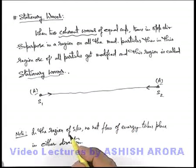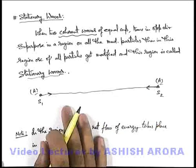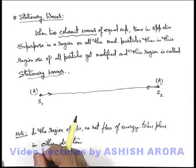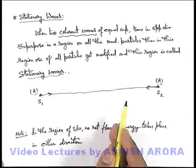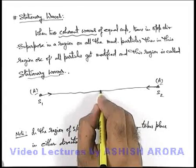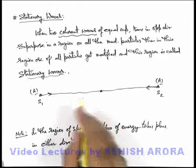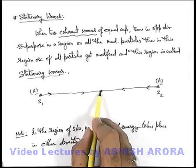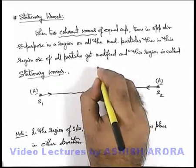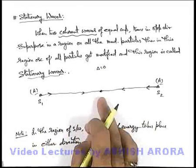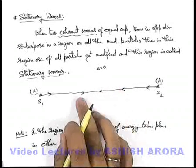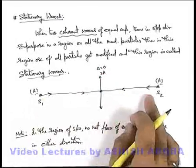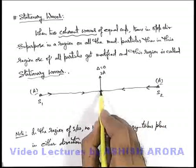Let's also discuss how qualitatively we can explain the modification in oscillation of these medium particles. This can basically be explained with the concept we already studied in interference. If the 2 sources are started simultaneously, let's talk about the medium particle exactly located between the 2 sources, where the 2 waves travel equal paths and superpose on this medium particle. So for this particular particle, the path difference of the waves will be zero, as they are covering equal paths. So at this point the 2 waves will produce constructive interference and the particle will oscillate with amplitude 2A, as the individual amplitude of each wave is A.